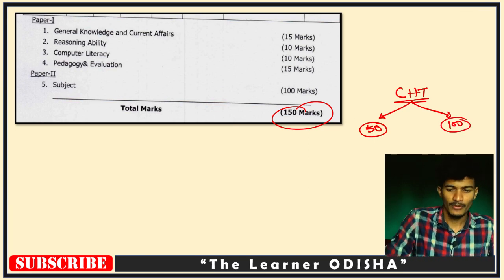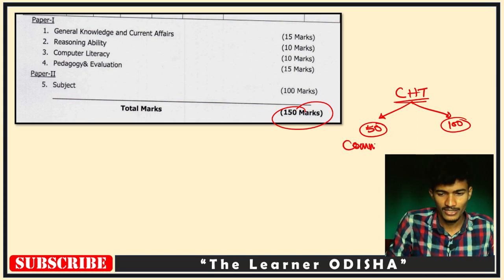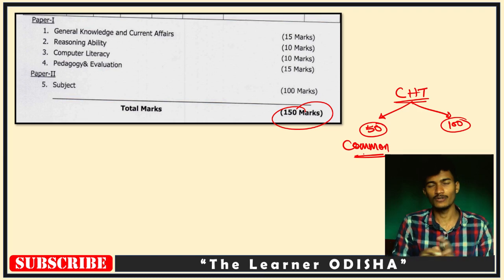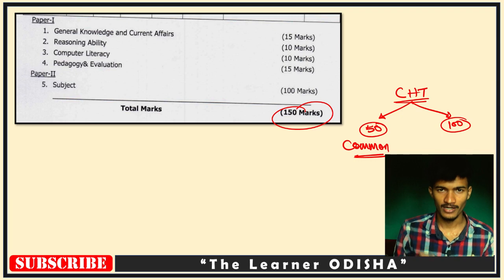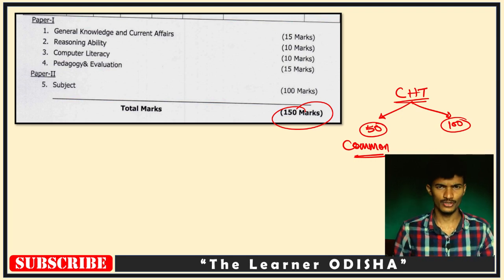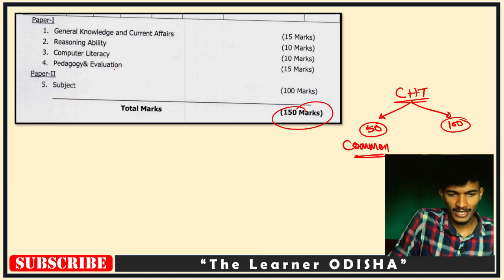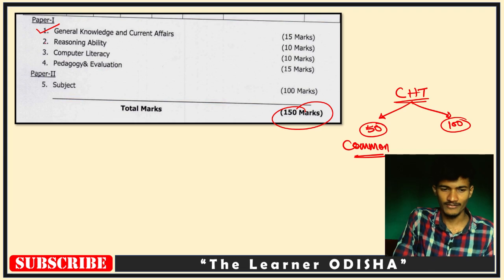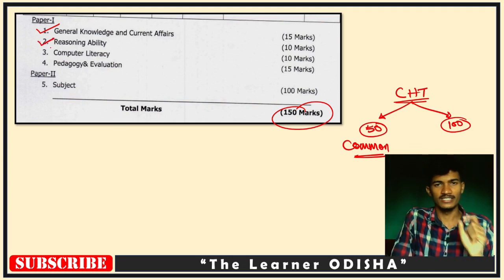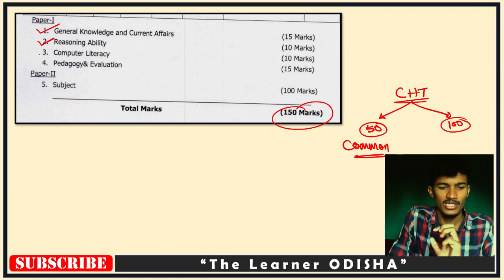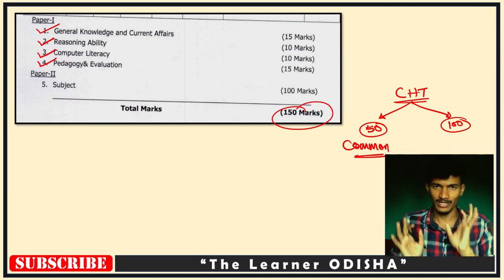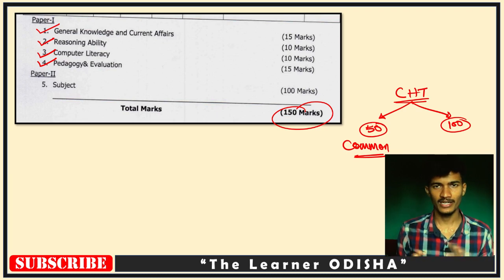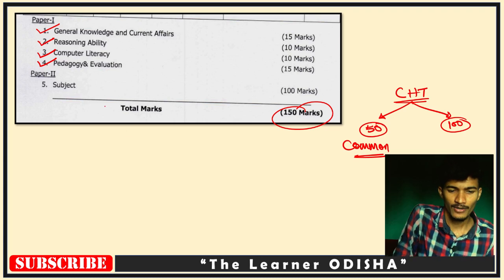Paper 1 is a common paper. It consists of reasoning with 10 marks, computer literacy with 10 marks, and pedagogy and evaluation with 5 marks, making a total of 50 marks as the common Paper 1.